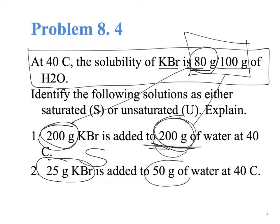The next case is 25 grams of potassium bromide in 50 grams of water. It looks like this amount was reduced by 2. So, if this amount is reduced by 2, let's reduce this one by 2. It will be 40, and we have 25, so we have less. Therefore, the solution is unsaturated.